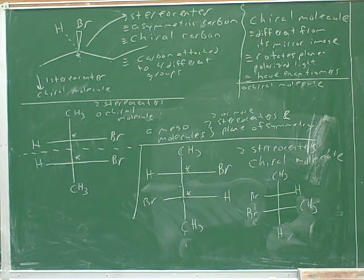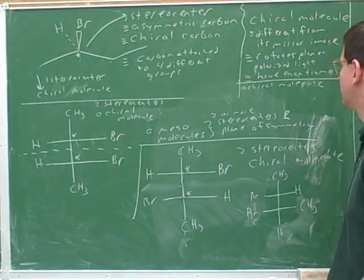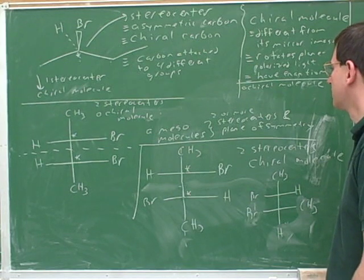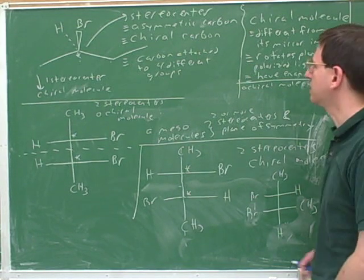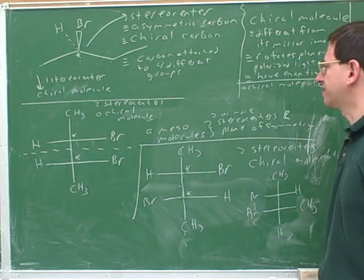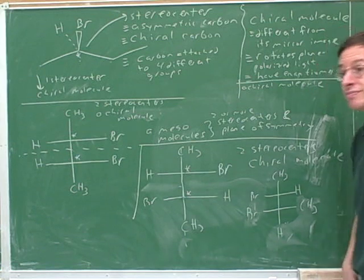Whereas if you have opposite configuration at all stereocenters, that means that you have enantiomers. Unfortunately, there are some complications. We don't have time to get into everything today. But that's the basic idea. We're looking at the difference between stereocenters for enantiomers and diastereomers. Okay. So we clarified the difference between a chiral carbon and a chiral molecule. And I think we also kind of clarified what enantiomers and diastereomers are and what the term meso means. Okay.